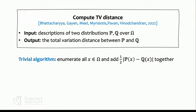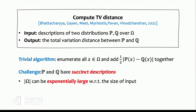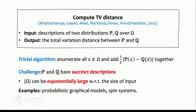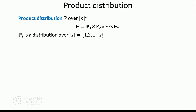By definition there is a trivial algorithm: enumerate all states in the space omega and sum over the differences. But the challenge is that distributions p and q may have succinct descriptions, making the sample space exponentially large with respect to the input size. So this trivial algorithm is slow in this case. There are many examples of such distributions, for example graphical models in machine learning and spin systems in physics.